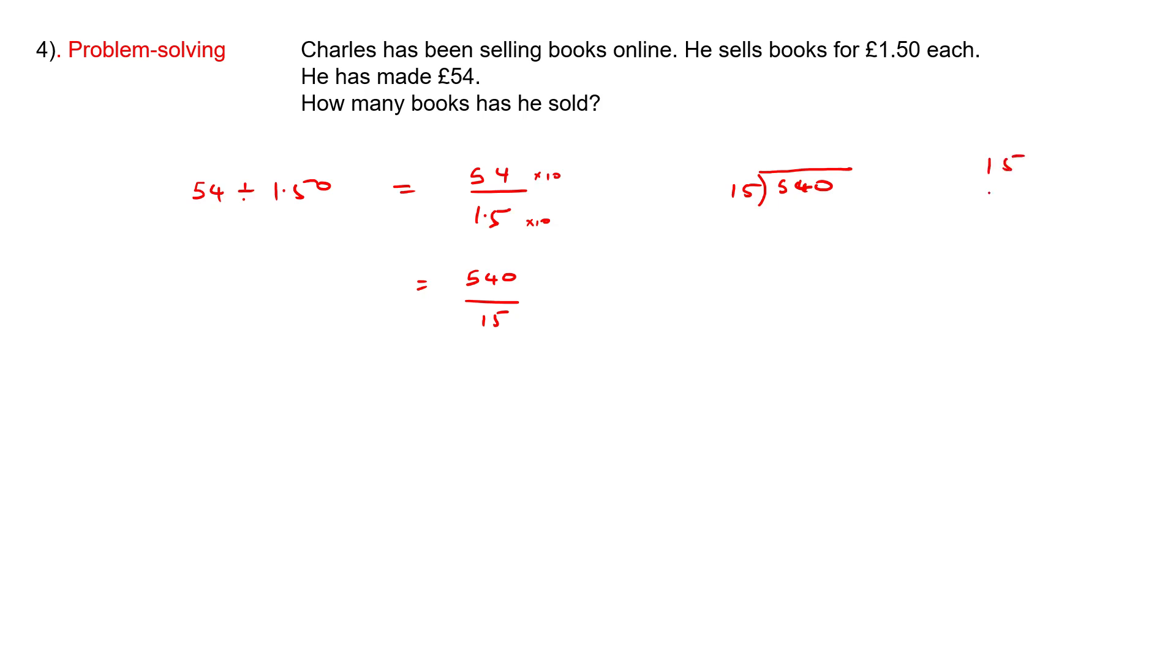Keep adding: 15, 30, 45, 60, 75, 90 - I'm going to stop there. Can 15 go into 5? Nope. Zero, carry the 5. Into 54 - that's one, two, three times because 60 has gone past it. So three times. 54 take away 45 is 9.